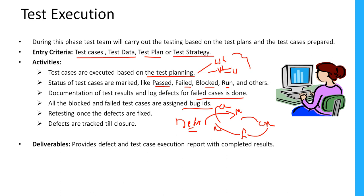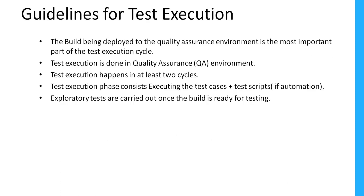These are all the different activities we do as part of testing. The main deliverable in the test execution phase is it provides a defect and test case execution record with completed results. Regarding the guidelines for test execution, the build being deployed to the quality assurance environment is the most important part. We need to do test execution only on the QA or quality assurance and testing environment — we need to deploy the build on the QA environment.